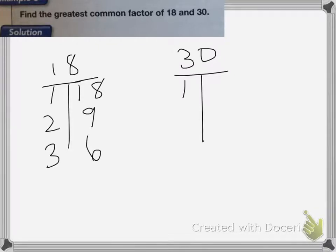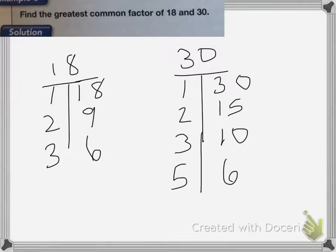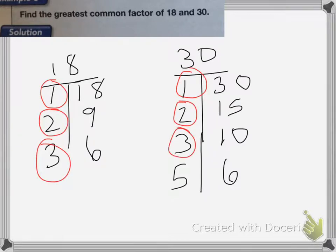And 30 I have 1 and 30, 2 and 15, 3 and 10, and then 5 and 6. So I'm going to circle the numbers that are common factors, which means that it's the same. So 1, 2, 3, and 6 are all my common factors. So the greatest common factor is going to be the biggest number, which is 6.